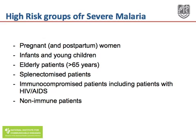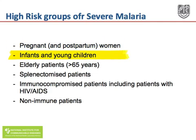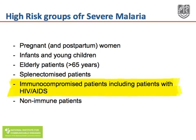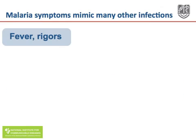Certain groups of patients are at particularly high risk for the development of severe malaria. Any non-immune person who develops malaria and there is a delay in treatment may develop severe malaria, but pregnant women and those in the postpartum period are particularly at risk. Infants and young children below five are an important group. Elderly patients, splenectomized patients, and those who are immunocompromised, particularly those with HIV-AIDS, are particularly at risk.